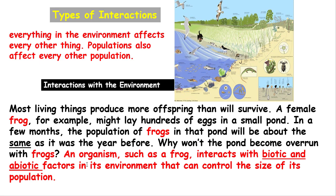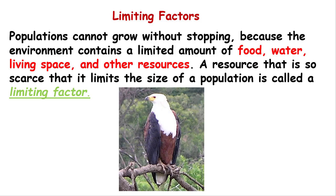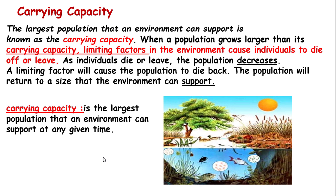Why won't the pond become overrun with frogs? An organism such as a frog interacts with biotic and abiotic factors. Biotic factors are living factors — for example, animals and plants. Abiotic factors are non-living — for example, water, temperature, soil, and rock. The environment contains a limited amount of food, water, living space, and other resources. The factor that limits the size of a population is called a limiting factor.